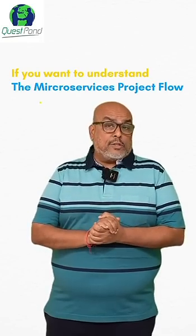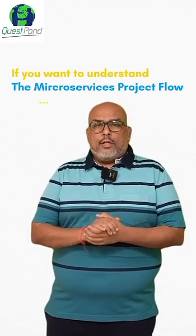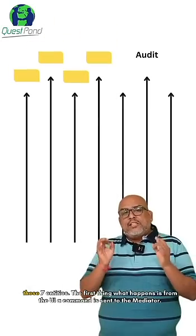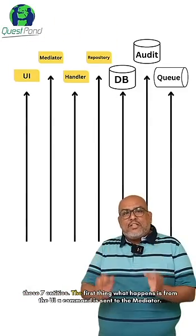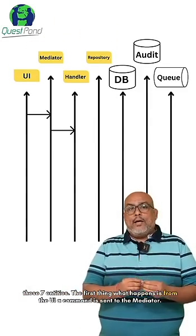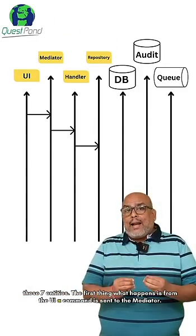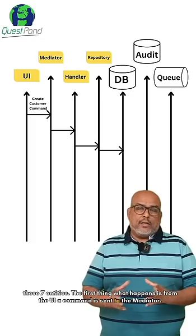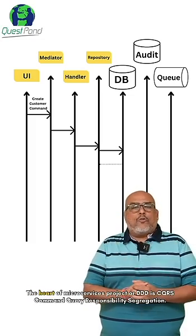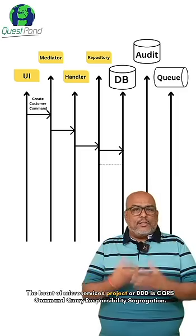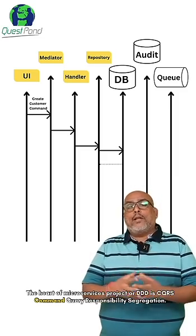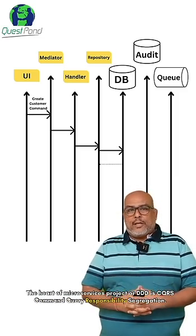If you want to understand the microservices project flow, you need to understand the interaction between these seven entities. The heart of a microservices project — or rather DDD — is CQRS, right: Command Query Responsibility Segregation.